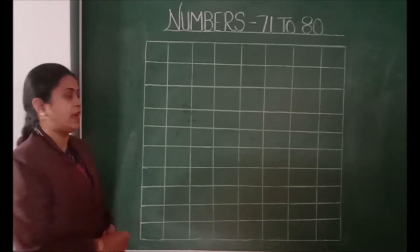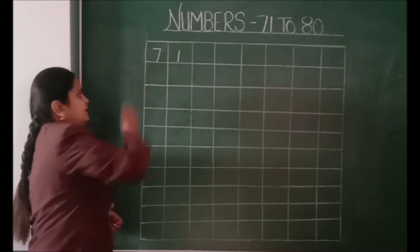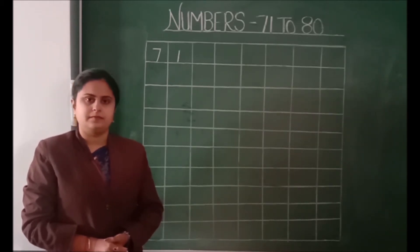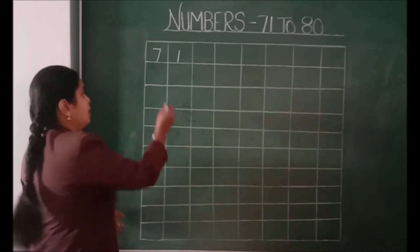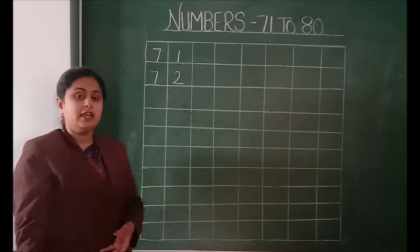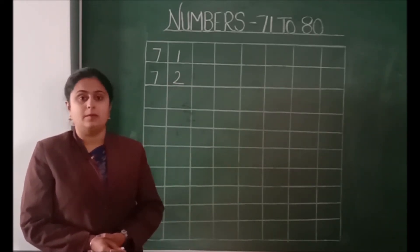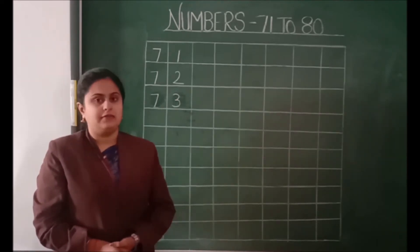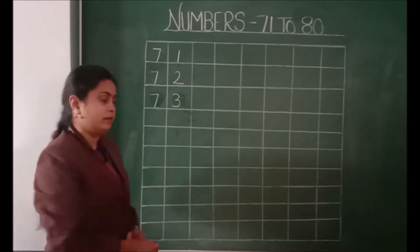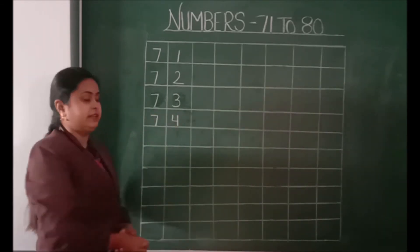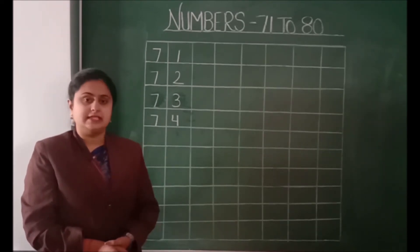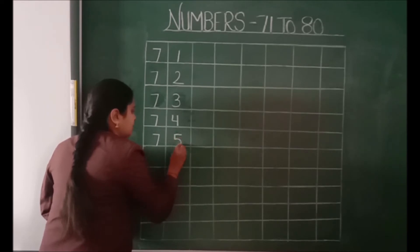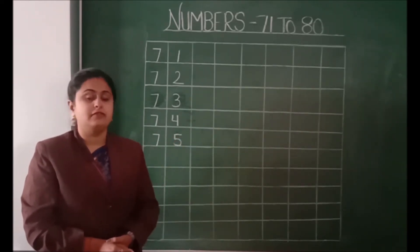To write number 71, we will write 71. What is our next number? 72. After 72, what will come? Number 73. After 73, what number will come? 74. After 74, 75.